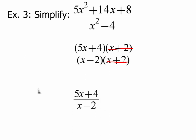So this is how you simplify a rational expression. You factor everything and then you cancel things out.